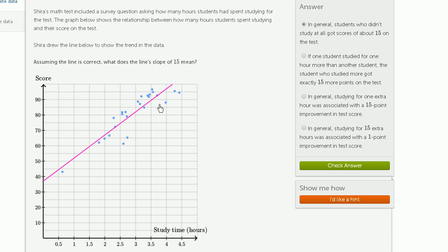A slope of 15 means that if I'm on the line and I increase in the horizontal direction by 1, I should be increasing in the vertical direction by 15. You see that. If we increase by 1 hour here, we increase by 15% on the test.